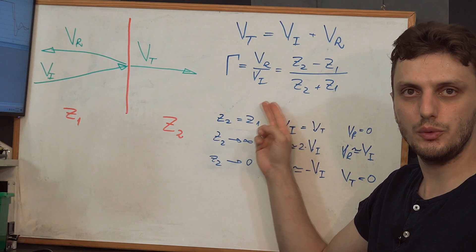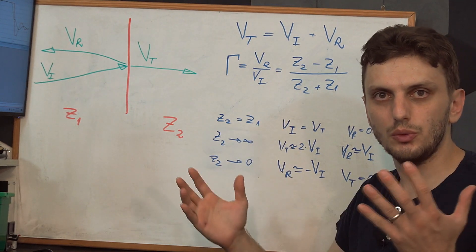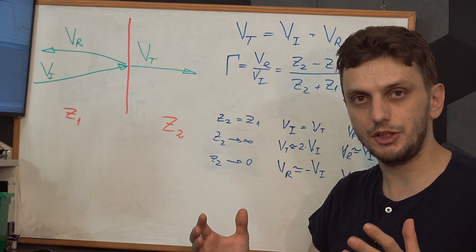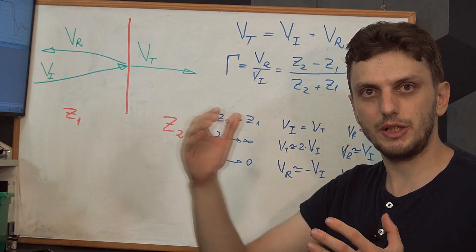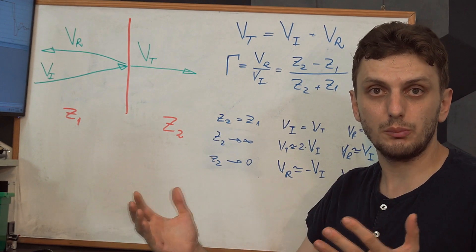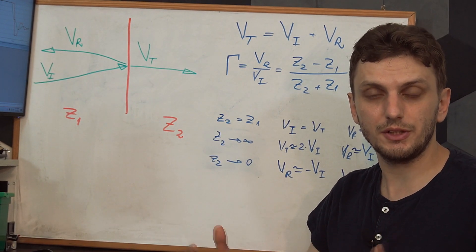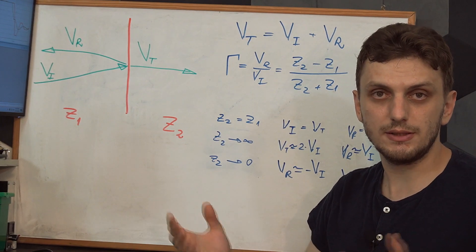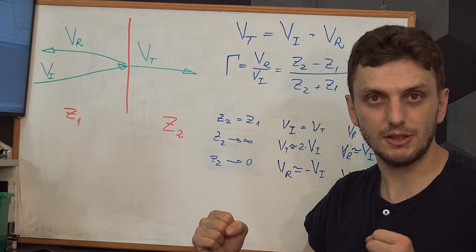Based on how well the two impedances are matched — between two lines or between a line and a load — we can determine how much energy actually gets transferred into the load. If there's a mismatch, the signal will bounce back and you will have inefficient energy transmission, or if working with small signals, you'll have reflections in the line. To make sure we clearly understand this reflection behavior, I have a final simulation prepared.